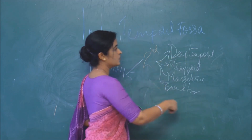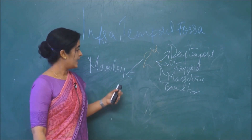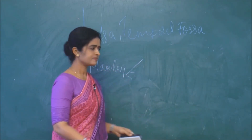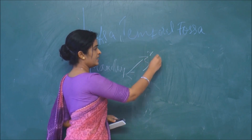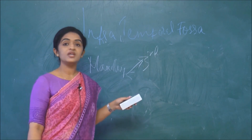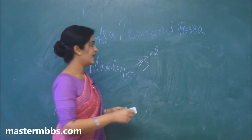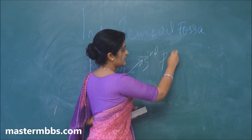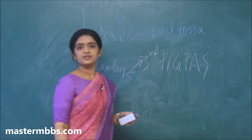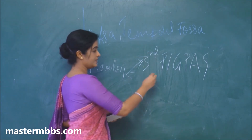So those are the four sets of branches arising from the second part of the maxillary artery. Now we move on to the third part. The third part of the maxillary artery enters into the pterygopalatine fossa through the pterygomaxillary fissure. To make it easy, we have another mnemonic: PIGPAS — P-I-G-P-A-S — for the third part of the maxillary artery.